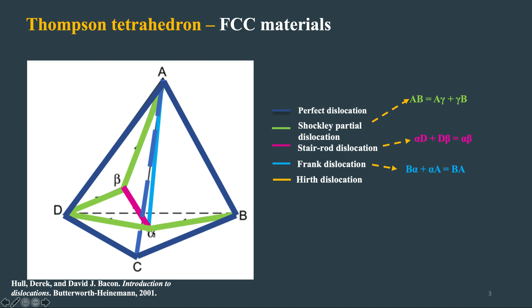So stair-rod is nothing but alpha delta plus beta delta equals to alpha beta. So this is the stair-rod which is formed by connecting two centroids of two faces and then there is Frank partial which is formed by joining the vertex to the opposite centroid of this face. So this is Frank partial and Hirth dislocation is nothing but a one-third [001] kind of dislocation and this is formed by some kind of reaction.